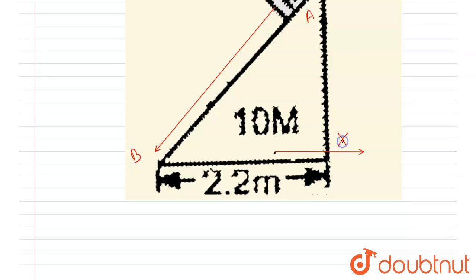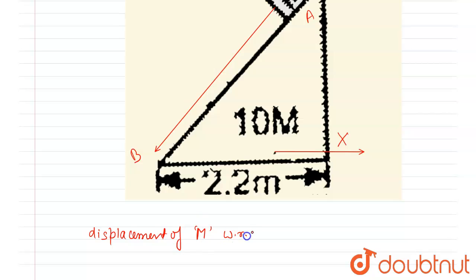If the wedge moved by a distance x, we can see the displacement of mass m. I will write: displacement of m with respect to 10m is equal to 2.2 meters towards the left.